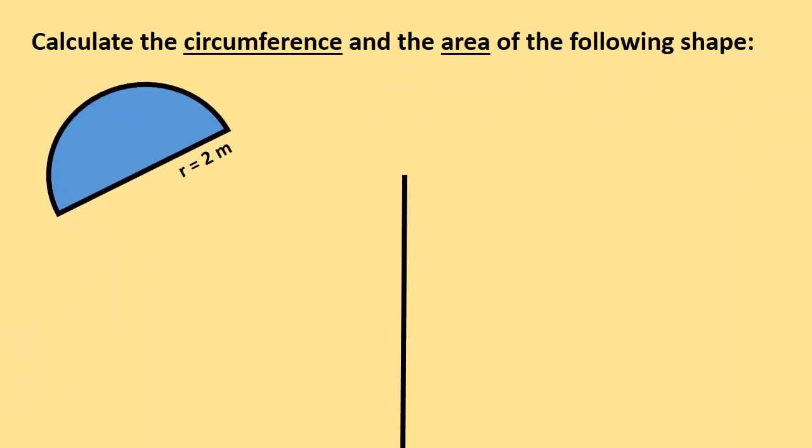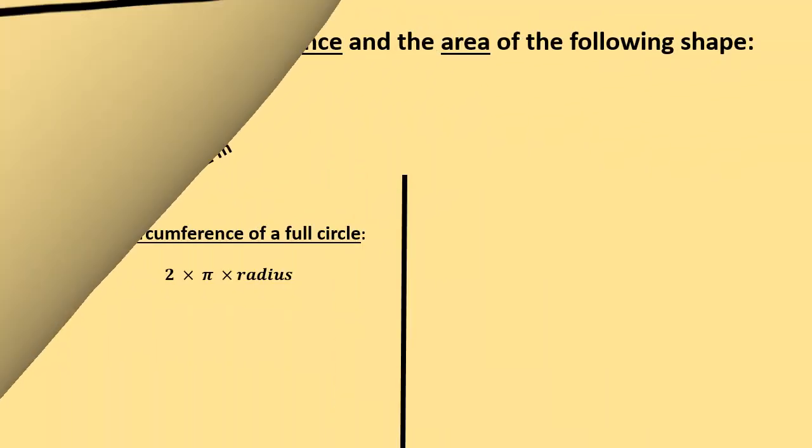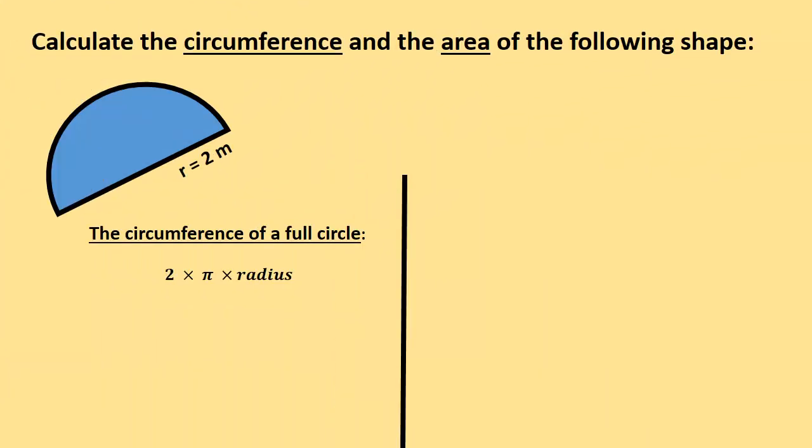Let's quickly have a look at half a circle. There's one thing you must note with the circumference of a half circle. They've given us half a circle and the radius is 2 meters. We only know the circumference of a full circle, which is 2 times π times radius. So we calculate that first: 2 times π times 2 gives you 12.57 meters.